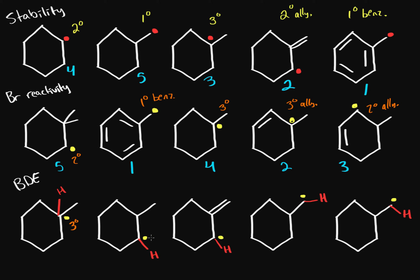Labeling each radical: this one is tertiary, this one is secondary, this one is secondary allylic, this one is primary, and this one is primary benzylic. The most stable radical is the primary benzylic because it's benzylic, so it has the least bond dissociation energy — it's very easy to break that bond. The second most stable is the secondary allylic, so it has the second lowest BDE.